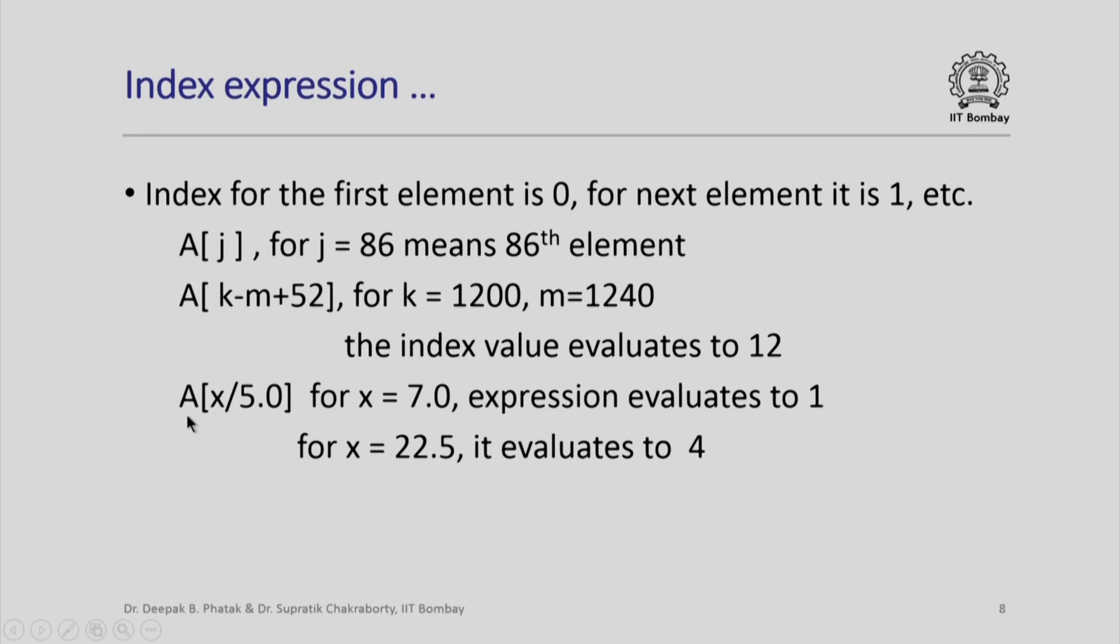I may even say a[x/5.0], which is actually a floating-point expression. If x is 7.0, the expression evaluates to 1 because the result is always converted to an integer value. Similarly, for x equal to 22.5, it will evaluate to 4. Of course, it does not make sense to use floating-point expression in index expression.